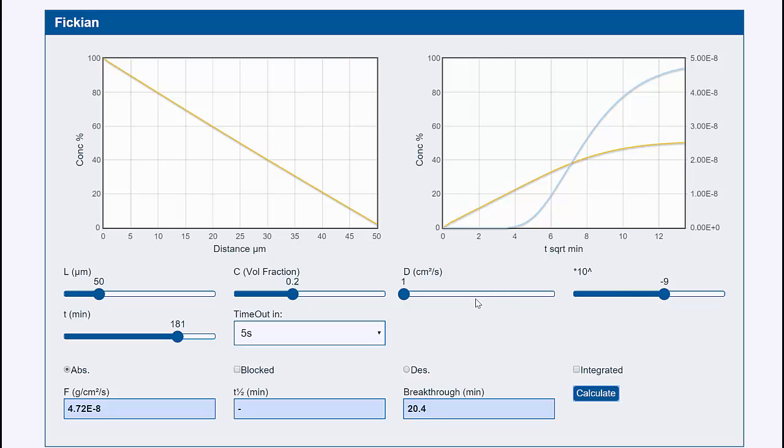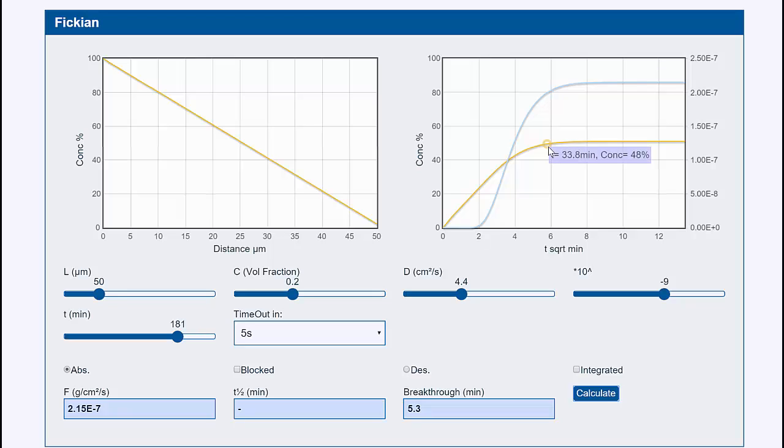But suppose it experimentally fills up much faster. Well, you just play with the slider until you find that it matches. So if it's reached 50% after 35 minutes, then you know the diffusion coefficient is 4.4 times 10 to the minus 9.